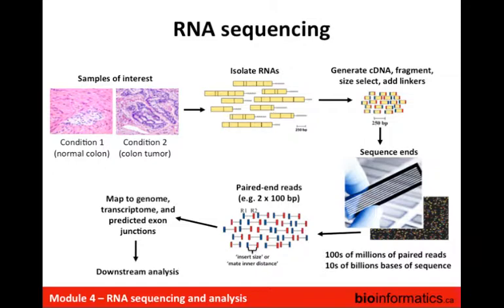We're starting to get back to the point where read lengths are approaching the length where we can actually sequence from one end and the other end, where the sequences might actually meet in the middle. In a sense they are still paired-end reads, but in a sense they aren't. We're at the transition where people are starting to think about whether we should make fragments larger so that we still get paired-end reads. But basically it's a technological limitation.